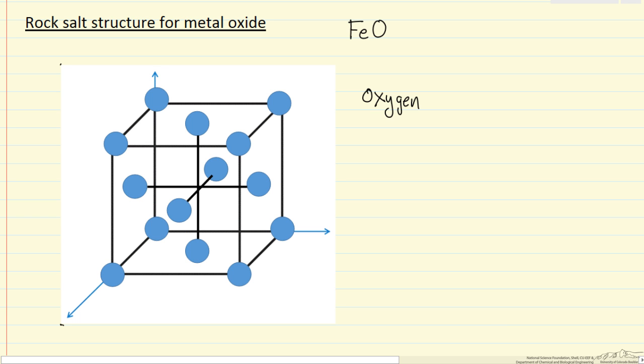It's called an octahedral site because these six atoms—this atom, this atom, these two, this one, and this one—form an eight-sided structure, an octahedral structure.